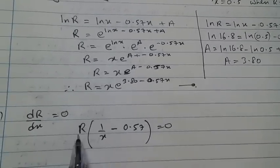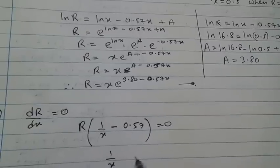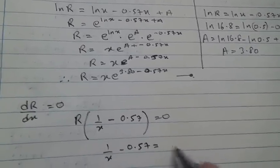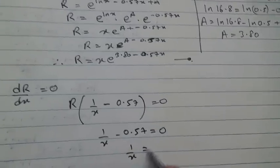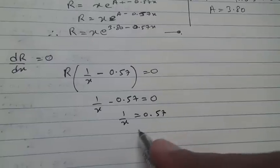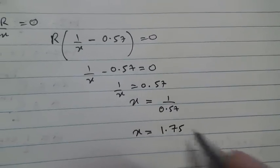R goes on the other side, it becomes 0 divided by R, which is 0. You have 1 over X minus 0.57 equals 0. So 1 over X equals 0.57. X equals 1 divided by 0.57. X is going to be 1.75.